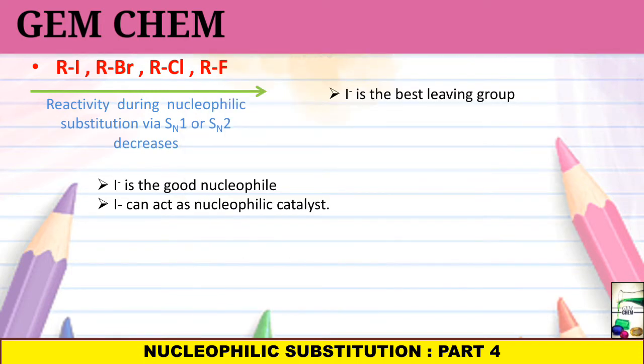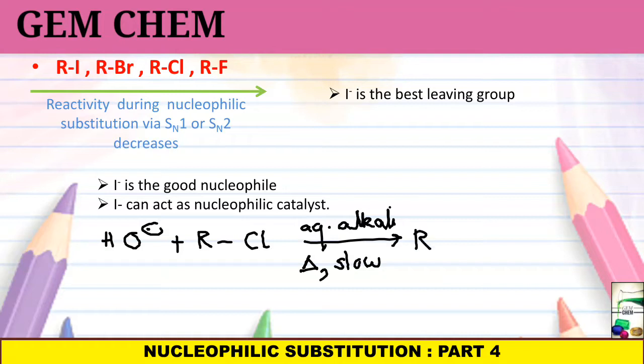Suppose we consider a reaction where OH- is a nucleophile plus RCl. We have aqueous alkali and heat, and the reaction goes on slow to produce ROH plus Cl-. So, OH is replacing Cl-. This is actually a slow reaction.